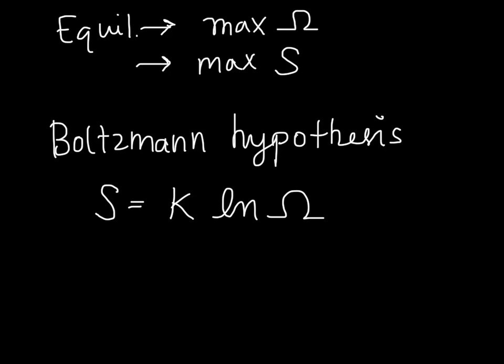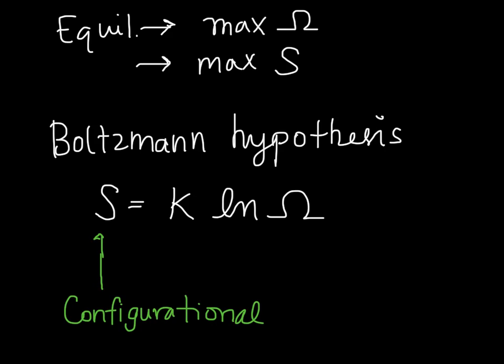It's important to note that this S is only the configurational entropy — the entropy due to how atoms can arrange themselves in energy levels or in space. It does not take into account things like nuclear energy levels. The more microstates we see, the higher the entropy of the system.